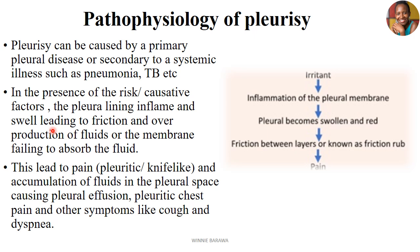When the pleura swell, friction increases between the two walls. As a result, there is overproduction of secretions or fluids that may fail to be absorbed by the membranes, and these can accumulate in the space. The changes lead to pain — what we call pleuritic or knife-like pain — and accumulation of fluid in the pleural space causes pleural effusion. We have an irritant initiating the inflammation of the pleural membranes, causing the pleural lining to become swollen and red, forming what we call the friction rub.